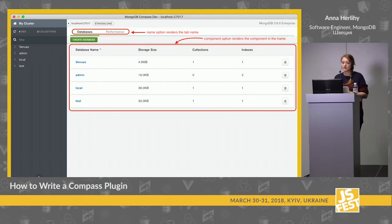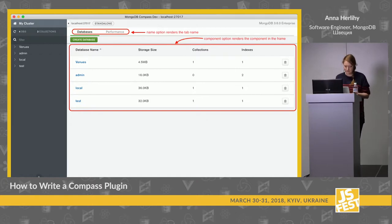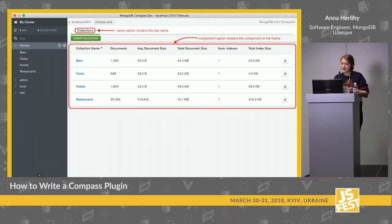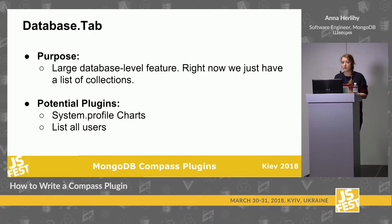The next level down is the database or instance level. This is also true for the entire connection but you have a lot more space — an entire tab where you could put charts, queries, or basically anything you want. This is called the instance tab. For all tab plugins, you have the option to name your tab and specify the component you want rendered. One level down from that is the database level — information true just for the database. For example, you could show profiling information from your system.profile collection.